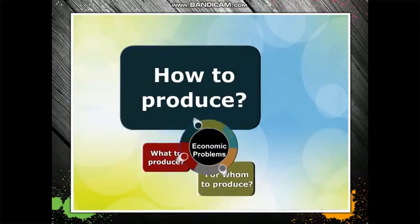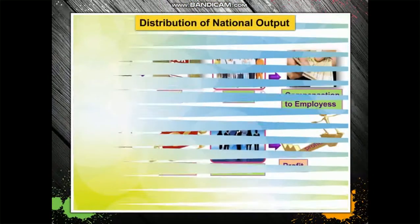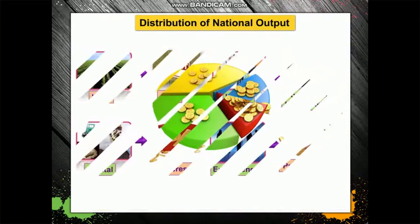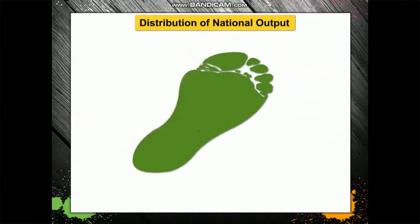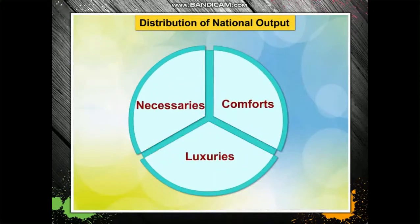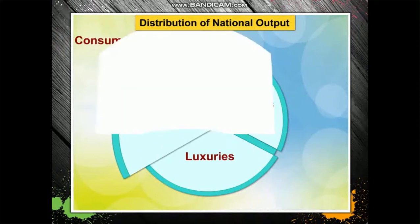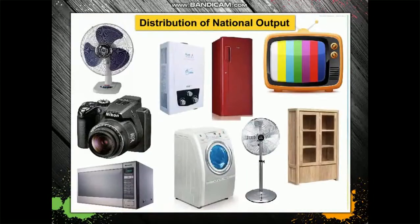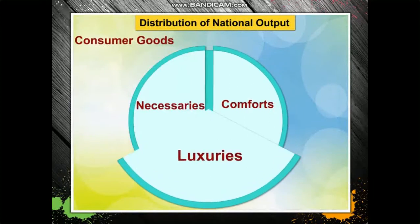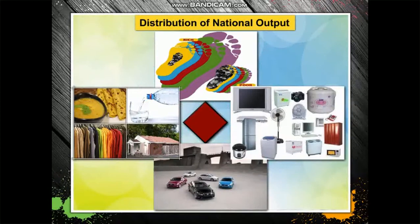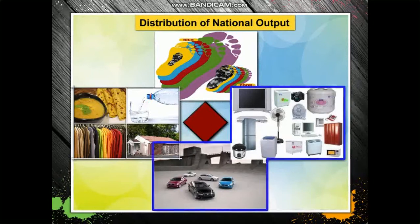Finally, the problem faced by an economy is to decide for whom to produce. National output is distributed among the various factors of production in terms of factor incomes. If income is unequally distributed, there will be more poor or middle-class people than rich. If income distribution is unequal, the economy will produce more necessities than luxury goods.